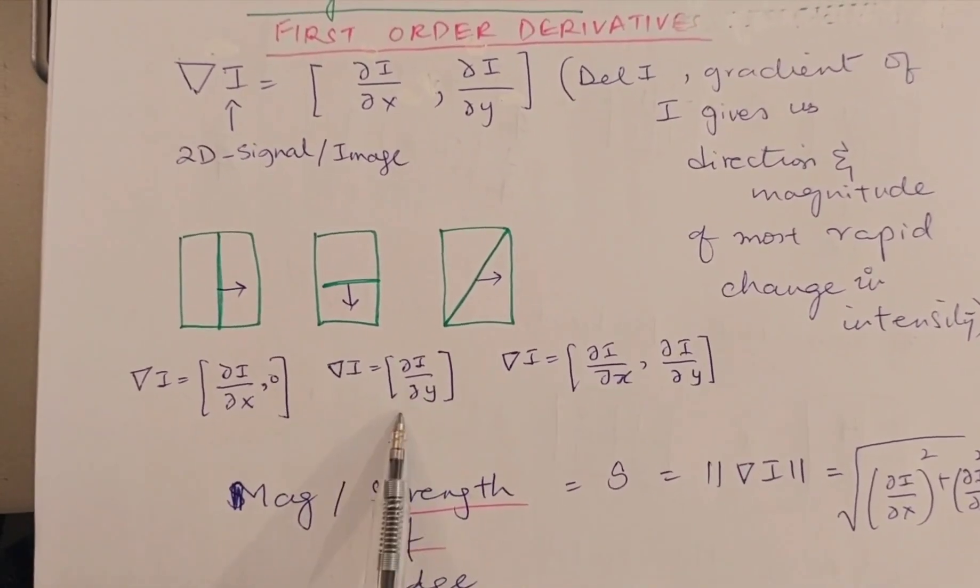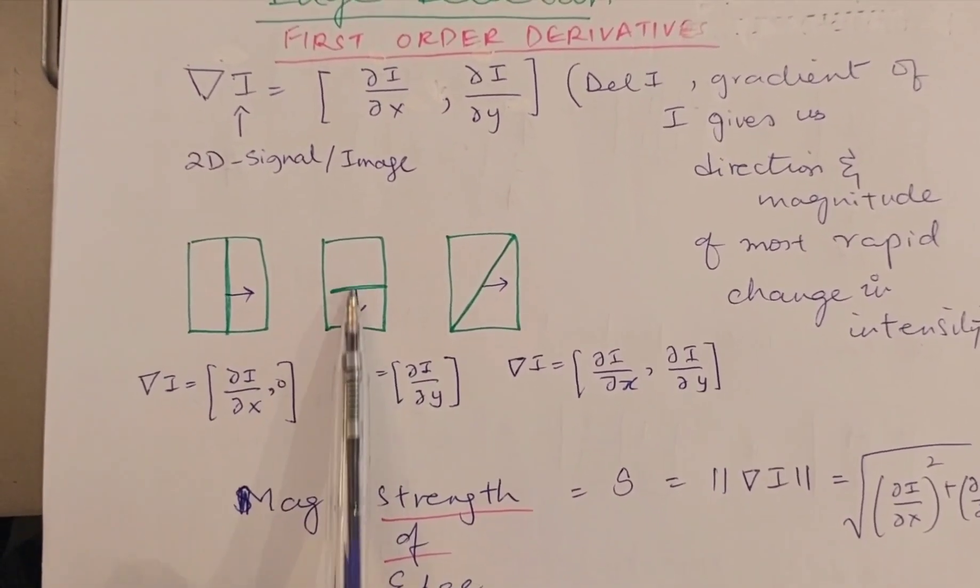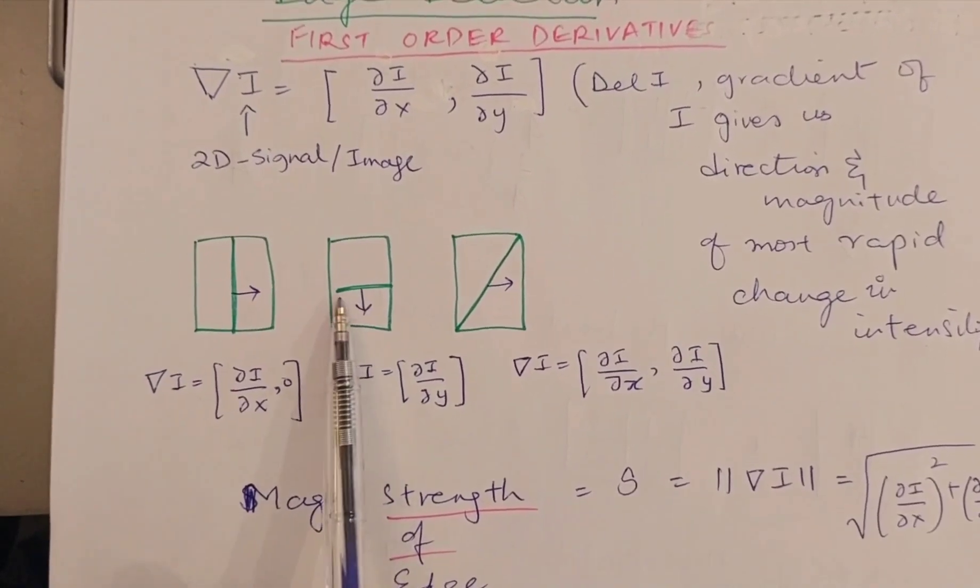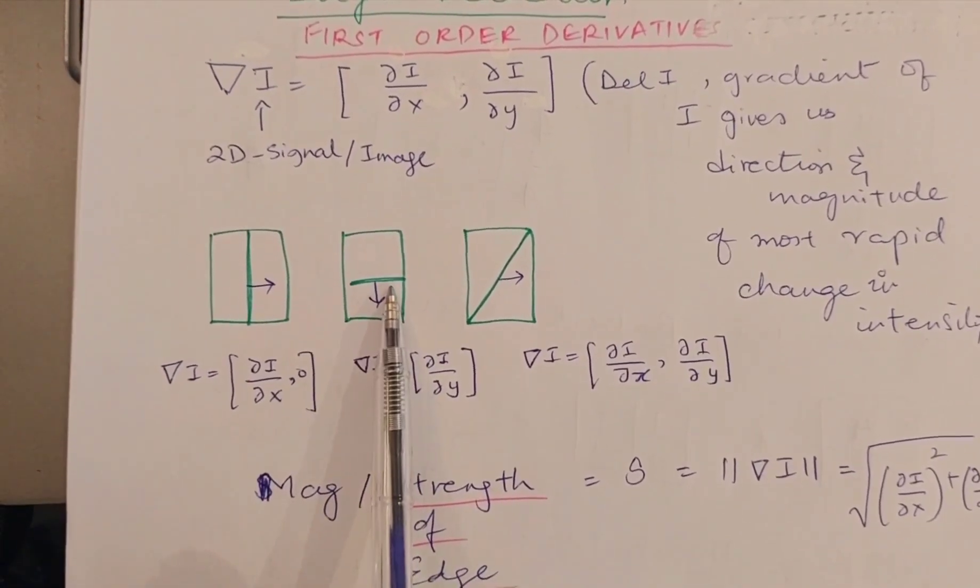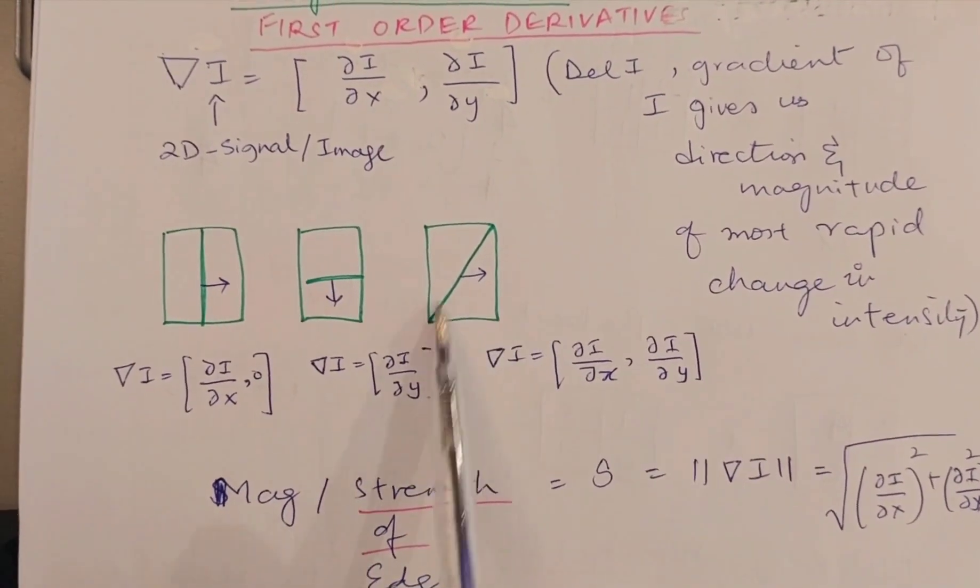It will not give any changes along the x-axis—this is a horizontal edge. And if I have an edge which is like a diagonal, in this case the del operator will have these two components: I with respect to x and I with respect to y.